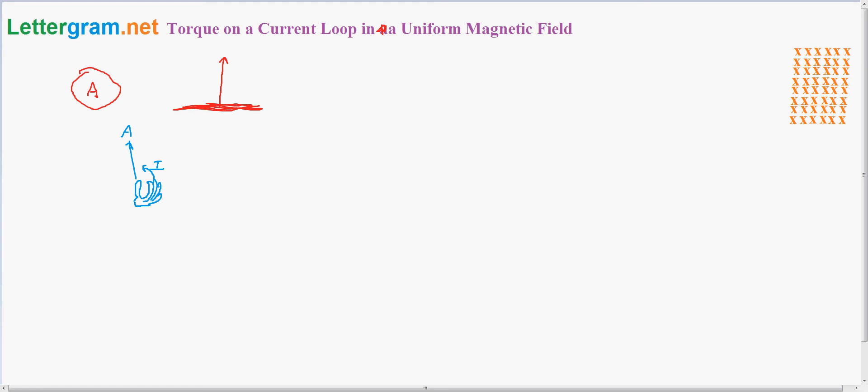This is the area vector of the loop. So, for example, the current is going this way around the loop. The area vector is coming out at us, which is right there.